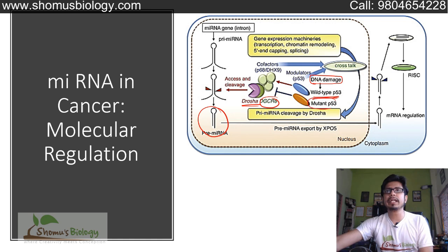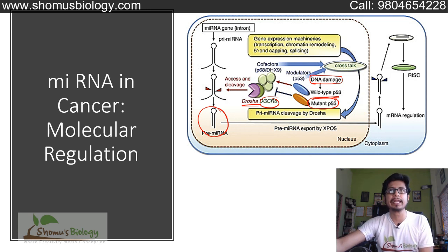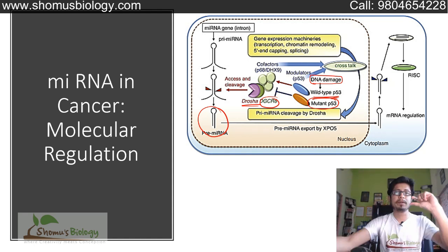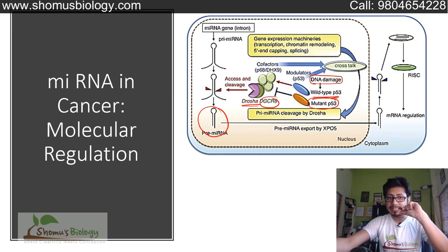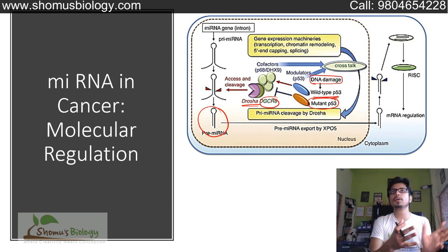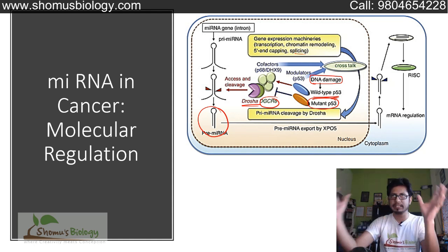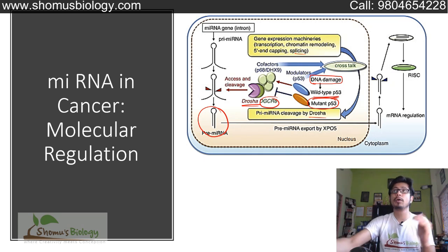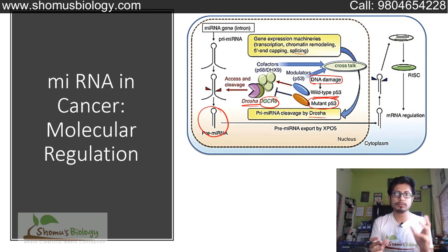But if p53 is mutated, then the mutated form of p53 will not activate Drosha — it will inhibit Drosha and DGCR8. As a result, nobody will be there to activate pre-miRNA and there won't be any activation of miRNA, no degradation of the mRNA, no killing of the cell. This is how p53 regulates miRNA-mediated mRNA degradation. miRNA is mostly of endogenous origin, and gene expression machinery — transcription, chromatin remodeling, 5' splicing — all have a crosstalk with the pre-miRNA cleavage by Drosha. p53 can regulate whether the miRNA complex or miRNA-mediated RISC complex is activated or not, depending upon the situation.